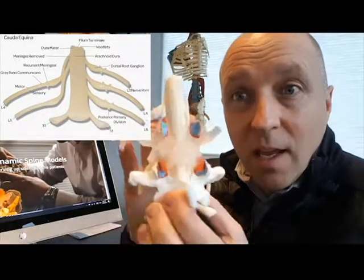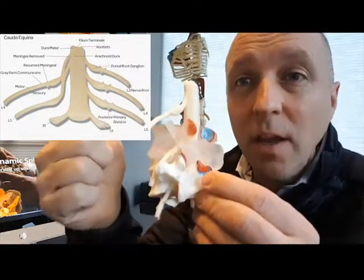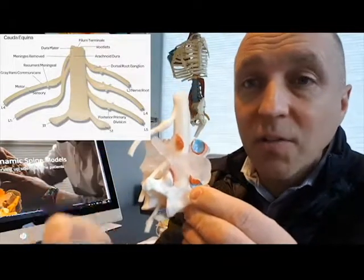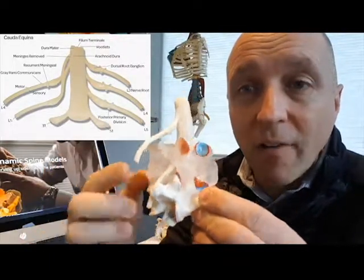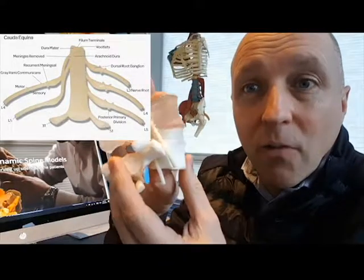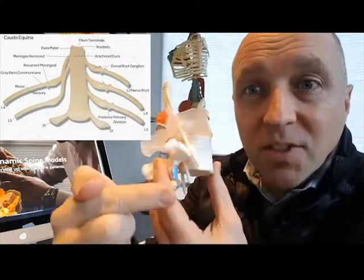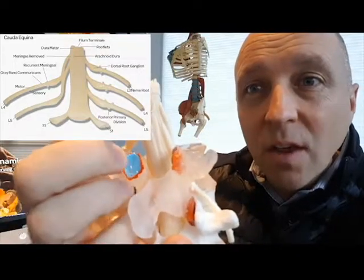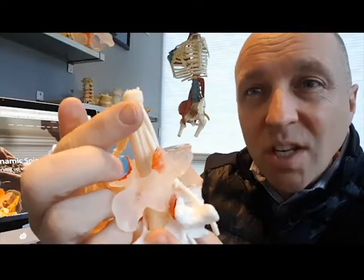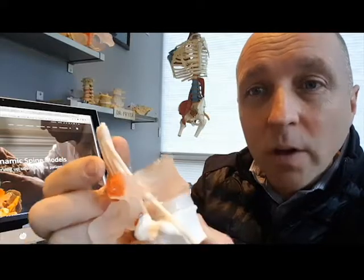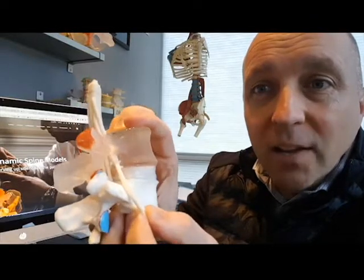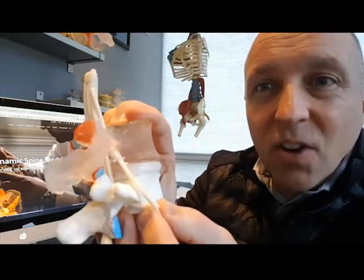As you can see, we have three exiting nerve roots on the left side of this L4-5 motion segment and we've only got two on this side because I've pulled off the dural sheath, showing the levels of the meninges. I wanted to demonstrate that the nerve exiting L5 here will be affected by a 4-5 disc herniation.